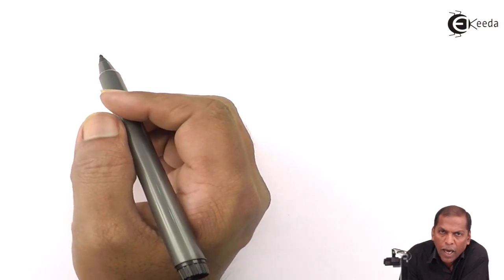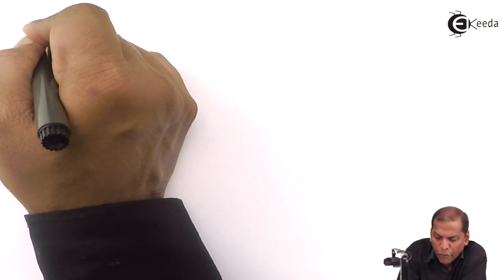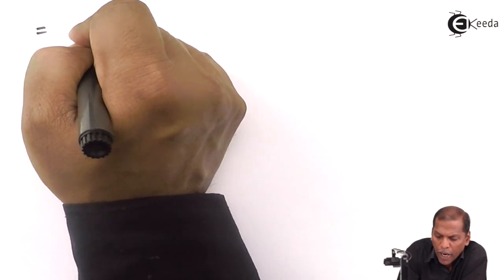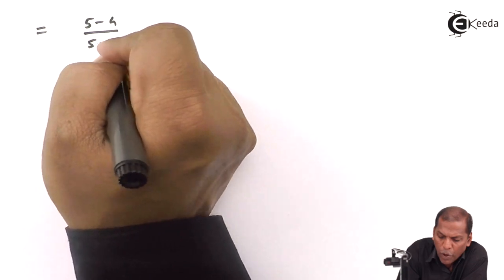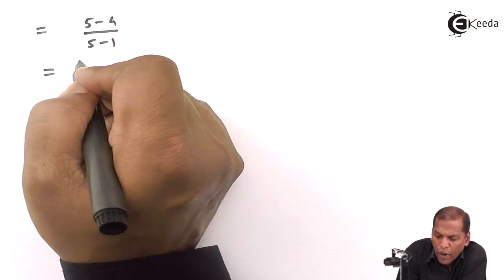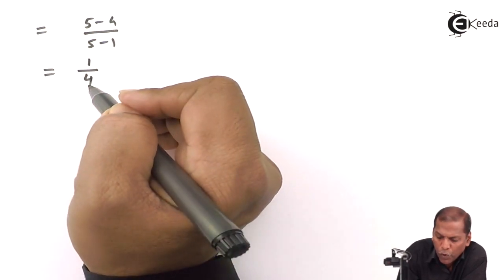Now we substitute the limit as x equals 5. So the next step will be (5 - 4)/(5 - 1). Now 5 - 4 gives us 1 and 5 - 1 gives us 4.